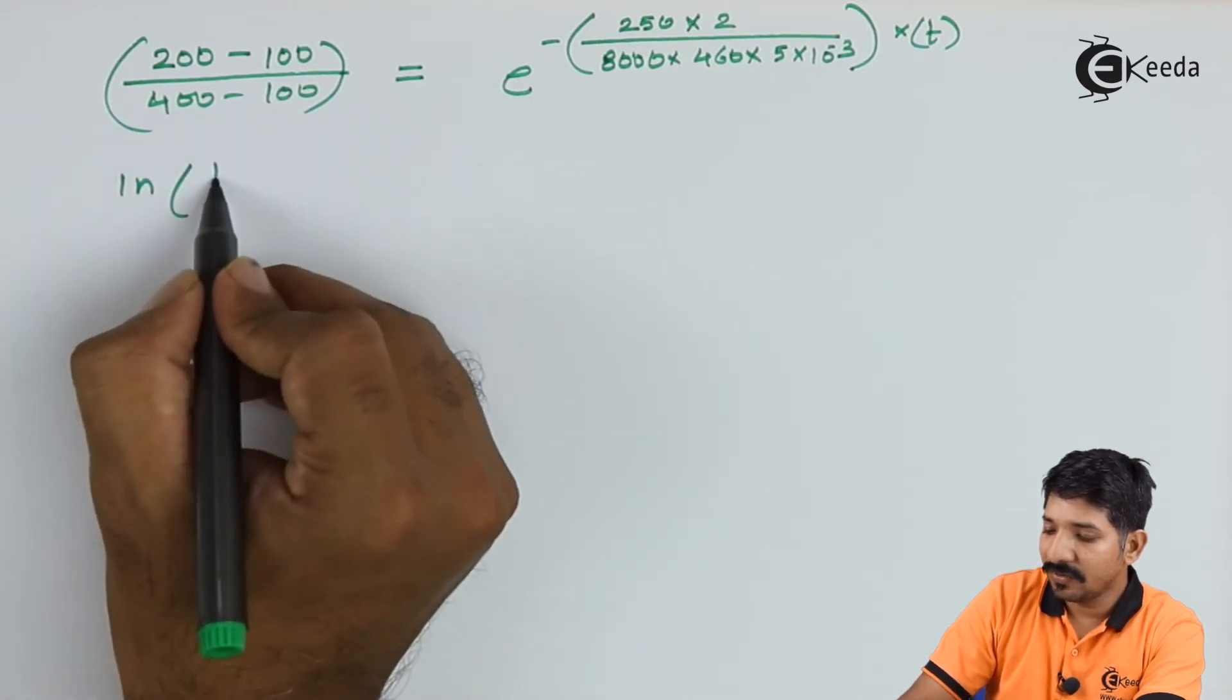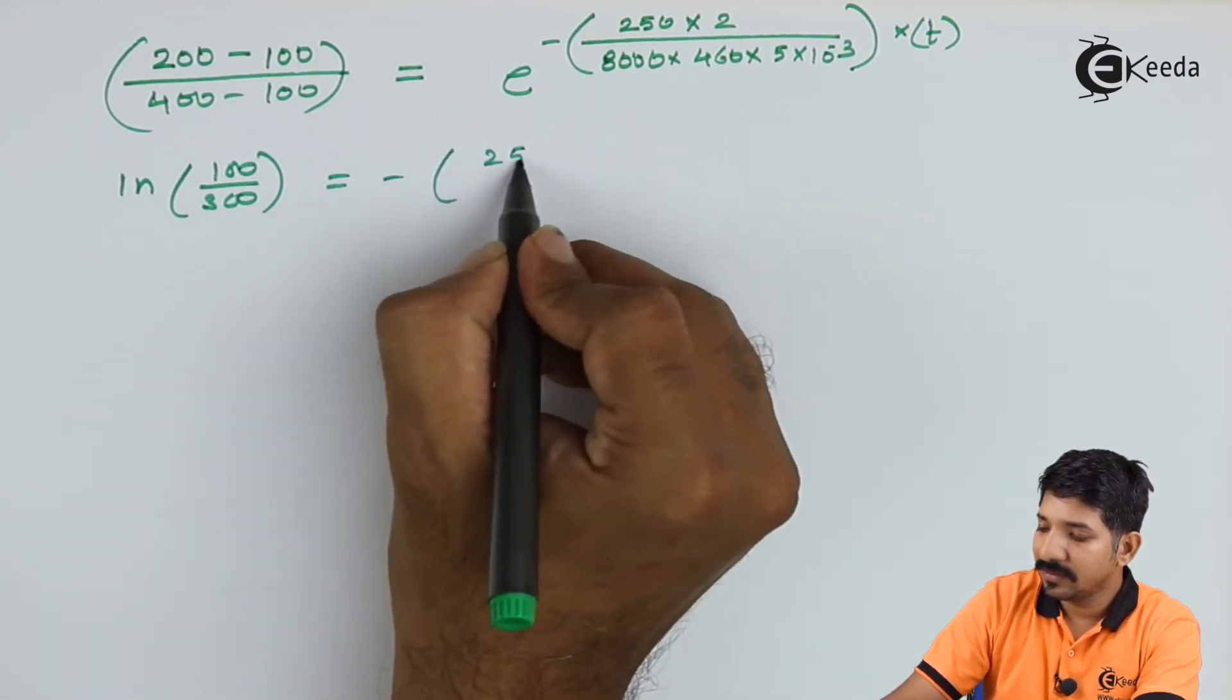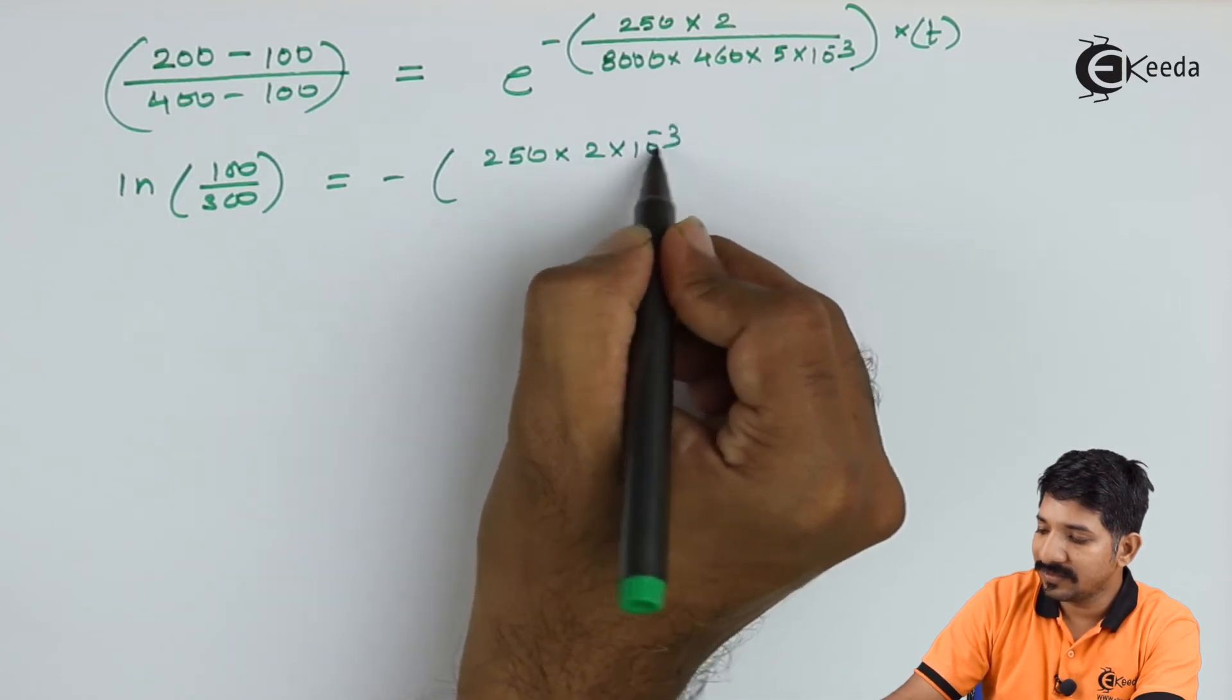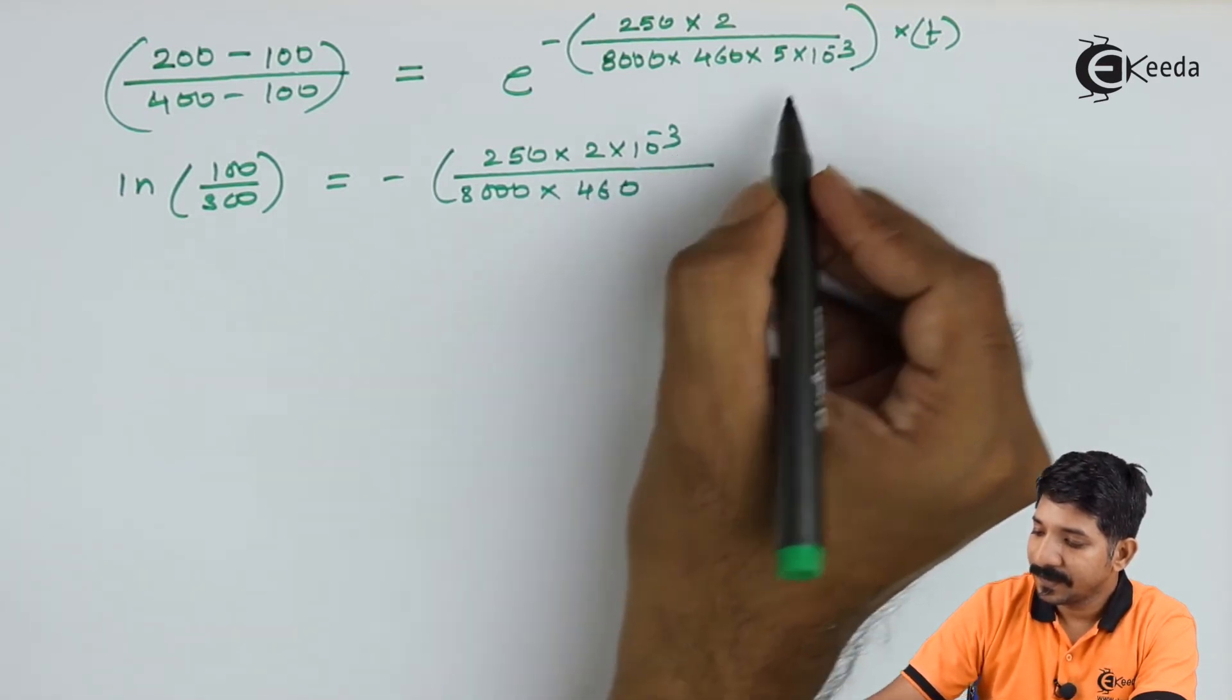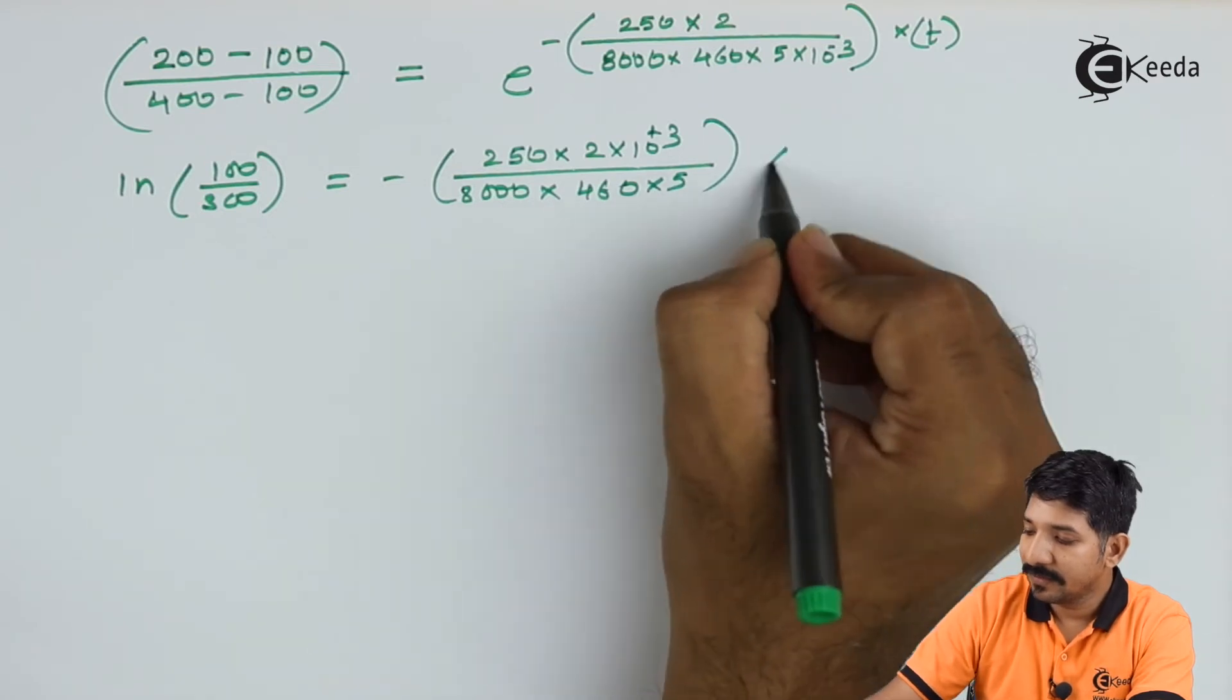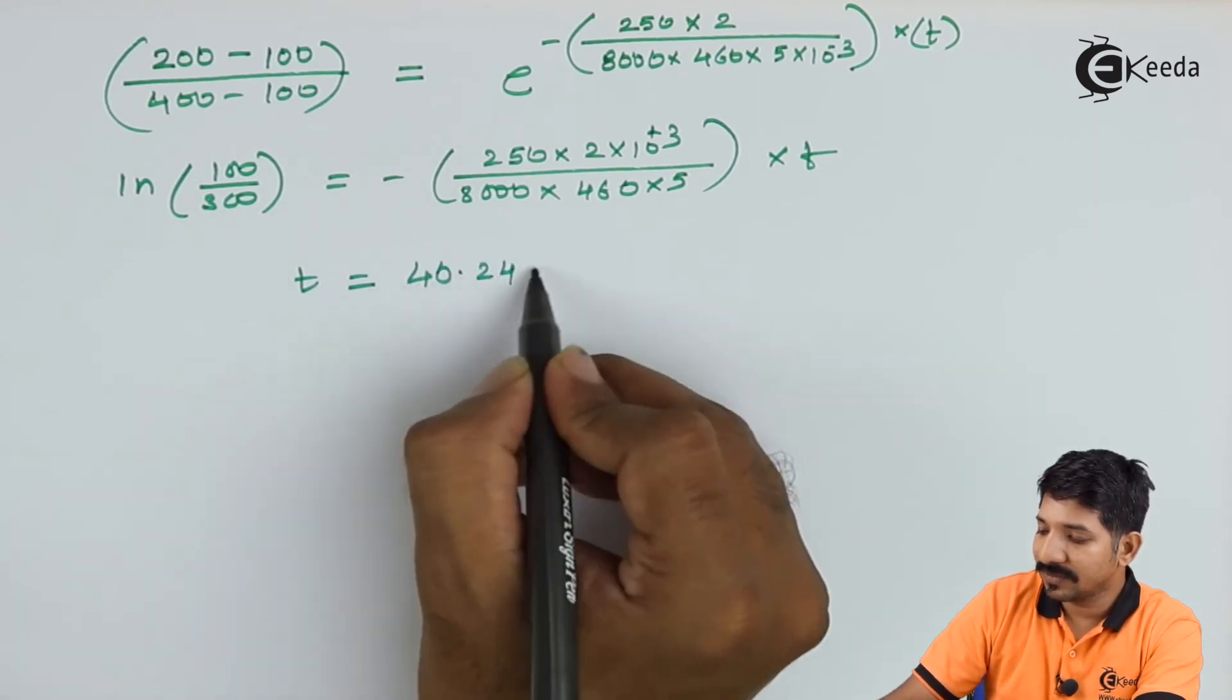Now if I take the log of every term, I shall have ln of 100 by 300 equals minus 250 into 2 into 10 raised to minus 3 upon 8000 into 460, multiply by 5. If I solve this, I can easily find the time which comes around 40.24 seconds.